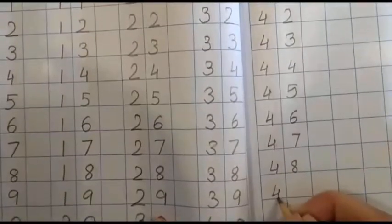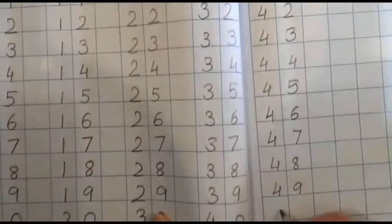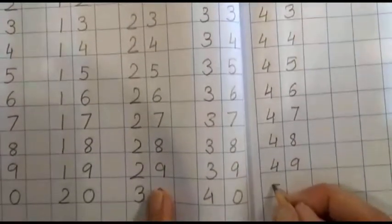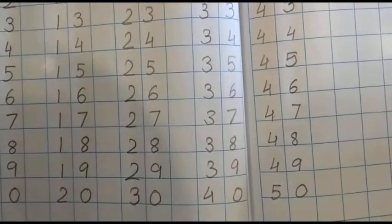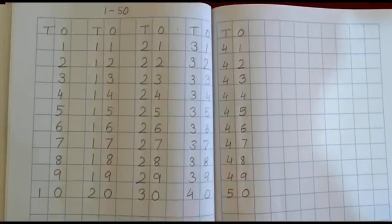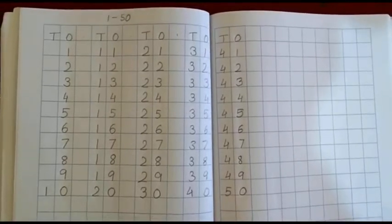Four nine forty nine, five zero fifty. The page will look like this.